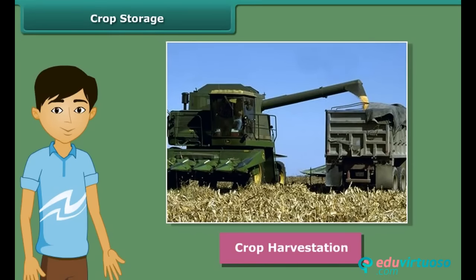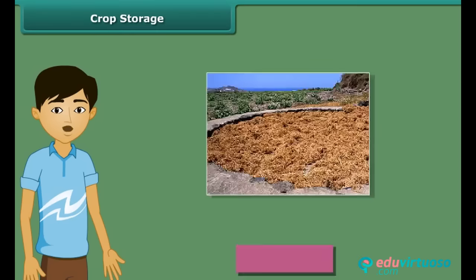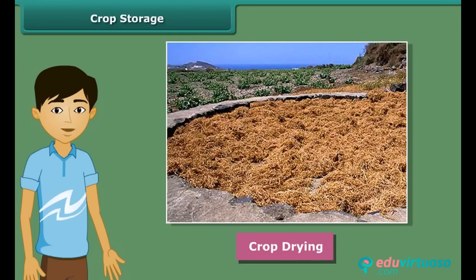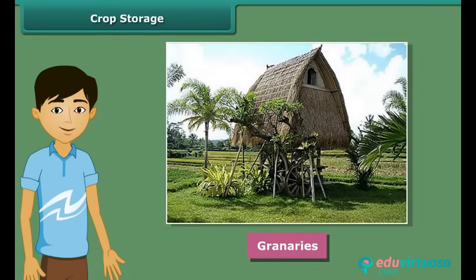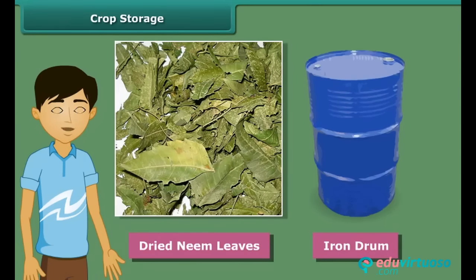Once harvesting is done, crops are stored in huge storages. We should keep some precautions when storing crops — if harvested grains are stored without drying, they may get spoiled or attacked by organisms and will lose their germination capacity. So the grains should be properly dried in the sun to reduce moisture. Farmers stock grains in jute bags or metallic bins, but for large scale storage they use silos and granaries. People also keep dried neem leaves in iron drums for storing food grains, as these leaves protect the grains from pests and microorganisms.